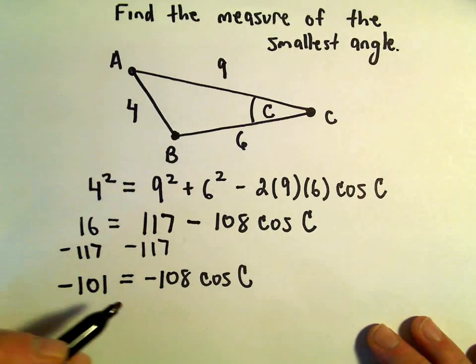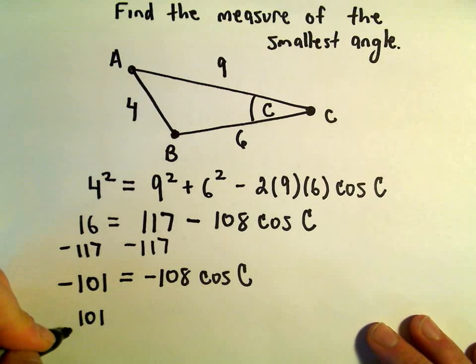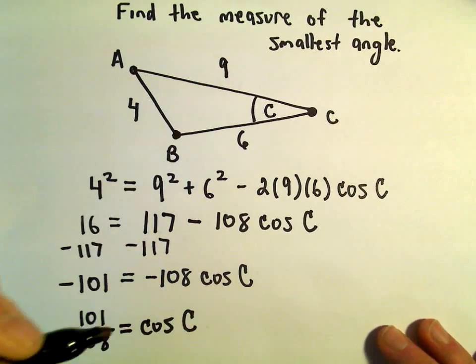We can divide both sides by -108. That leaves us with 101/108 equals cosine of C.